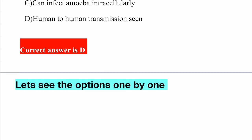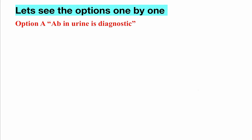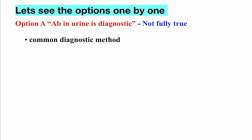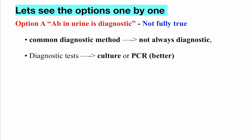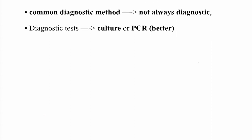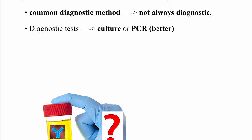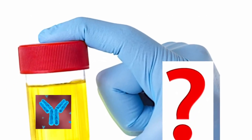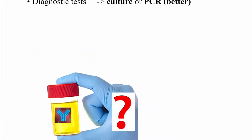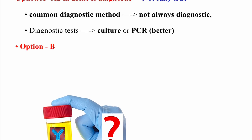Let's go through each option. Option A — antibody in the urine is diagnostic: when bacteria infect the body, antibodies are produced and excreted in the urine. This is a common diagnostic method, but not always diagnostic — you can get false positive and false negative results. The more important diagnostic test is culture, or PCR which is very diagnostic but costly. So this is partially true, making it tricky.